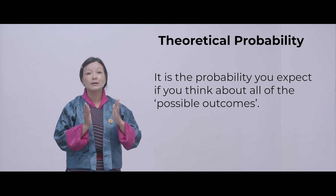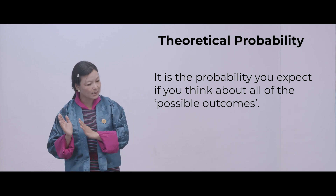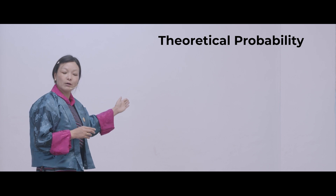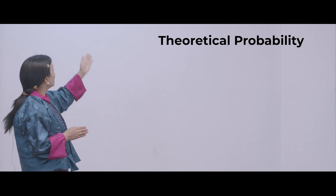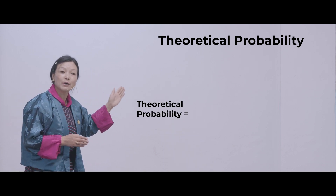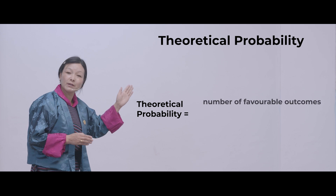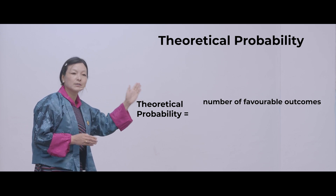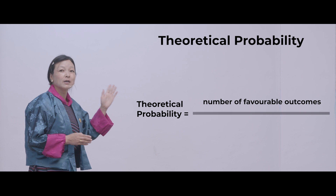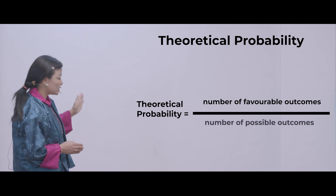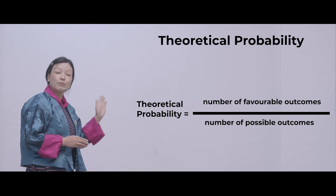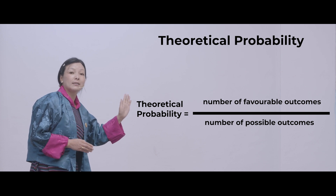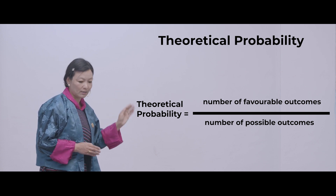The theoretical probability is the probability you expect if you think about all the possible outcomes. In theoretical probability you look at the possible outcomes, whereas in experimental probability it is the number of trials and the experimental results. For theoretical probability, the numerator is the number of favorable outcomes and the denominator is the number of possible outcomes.